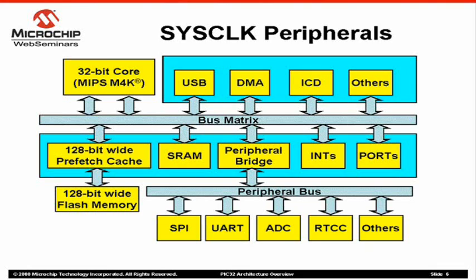These peripherals run at the same speed as the CPU and other bus masters. As a result, all accesses to the SysClock Peripherals complete in one cycle. Typically, peripherals with high data throughput are placed on the SysClock bus. Note that the I/O port modules are also on the SysClock bus, which means the CPU can access I/O ports at maximum operating frequency.